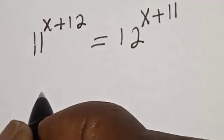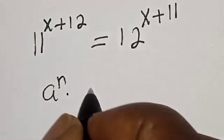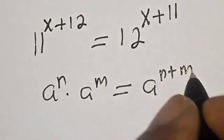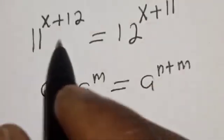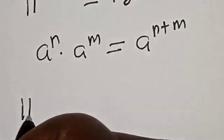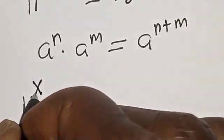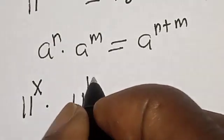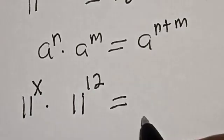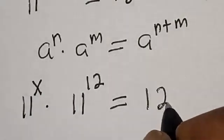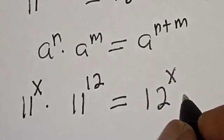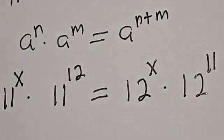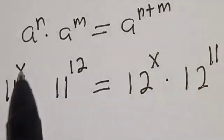Note that if you have a raised to power n multiplied by a raised to power m, this is equal to a raised to power n plus m. Now this equation becomes 11 raised to power s multiplied by 11 raised to power 12 is equal to 12 raised to power s multiplied by 12 raised to power 11. This is the whole of the equation.